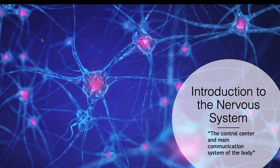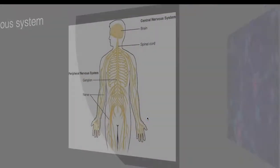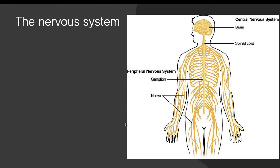Hello everyone! In this video I will give a brief introduction to the nervous system. The nervous system is the control center and main communication system of the body. It is the system that allows the body to connect with the brain, the part of the body that controls the body.